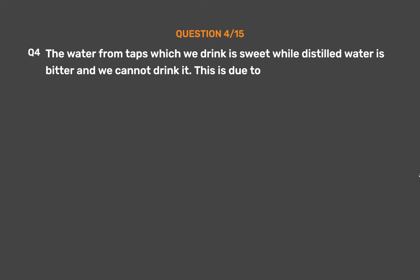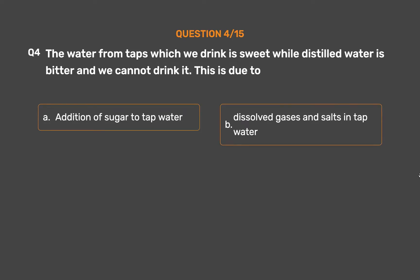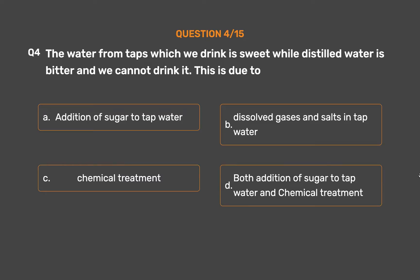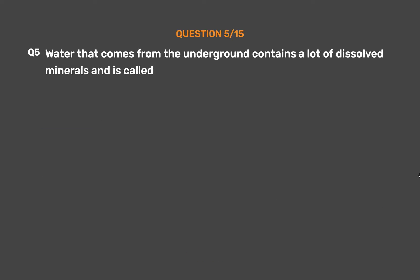Question number four: The water from taps which we drink is sweet while distilled water is bitter and we cannot drink it. This is due to — option A: addition of sugar to tap water, option B: dissolved gases and salts in tap water, option C: chemical treatment, option D: both addition of sugar to tap water and chemical treatment. The correct answer is option C: chemical treatment.